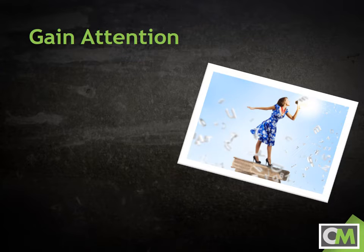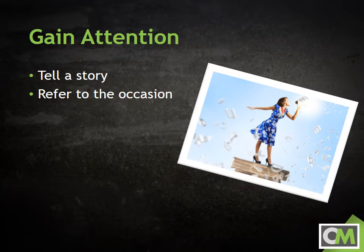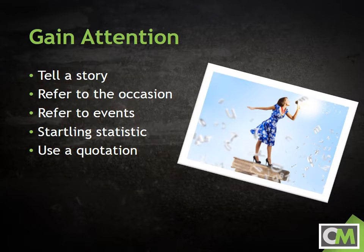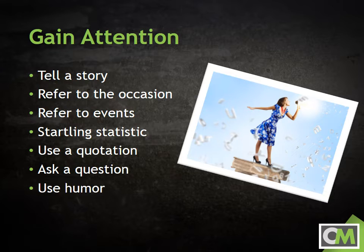Some of the more traditional methods of gaining the attention of the audience are: telling a story, referring to the occasion precipitating the speech, referring to either recent or historical events with a connection to the speech, sharing a startling statistic related to the content of the speech, using a compelling quotation, asking the audience a question or questions to pique their curiosity, or using humor to draw their attention. Whatever method you use to gain the attention of the audience, make sure it has some connection to the topic and content of your speech.